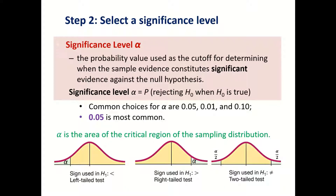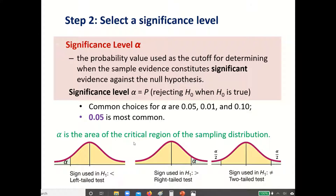In a hypothesis test, after we finish writing down the null hypothesis and alternative hypothesis, the next step is to look at your significance level. We talked about significance level alpha before when we discussed confidence intervals. We usually use alpha for significance level. Alpha is the area of the critical region of the sampling distribution.